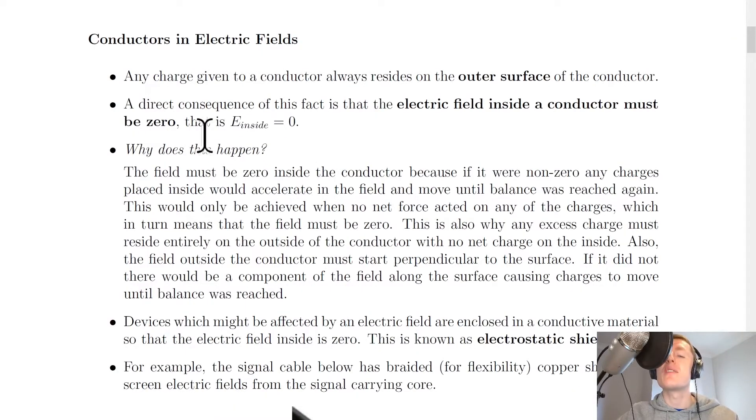Any charge given to a conductor always resides on the outer surface of the conductor. A direct consequence of this fact is that the electric field inside a conductor must be zero. That is, E inside equals zero, where we give the electric field strength the symbol capital E.